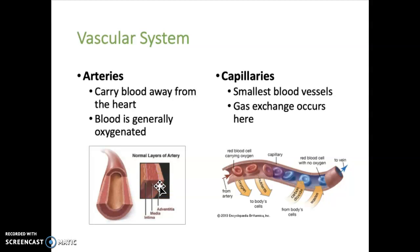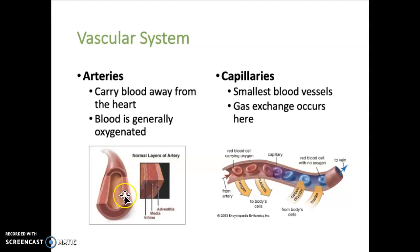The outer layer is called the tunica adventitia, or externa. This is the thickest, outermost layer. In the middle is the tunica media, which is composed of smooth muscle. That can actually contract or relax to change the size and shape of the lumen, which is the space that runs through the middle of the vessel.